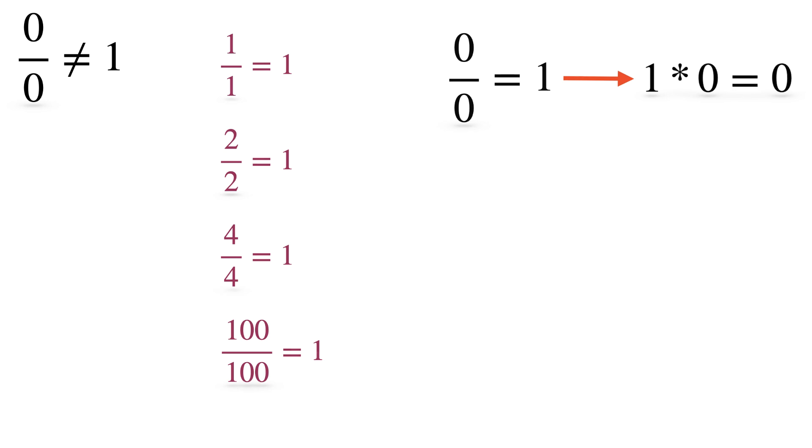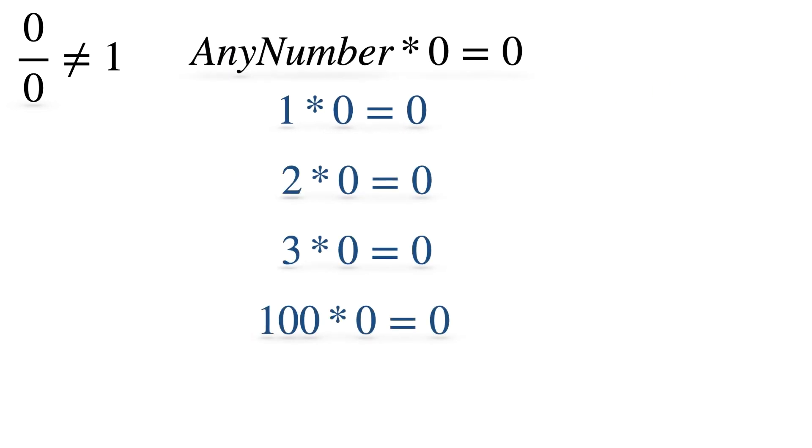There is another established fact in mathematics, that is, any number multiplied with 0 equals 0. Hence, 1 into 0, 2 into 0, 3 into 0, 100 into 0 will be equal to 0.